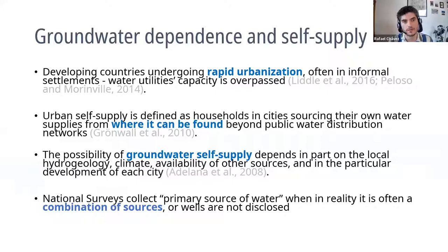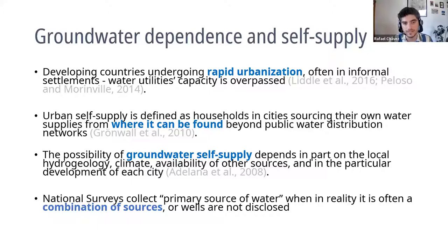As you might know, since 2014, half of the world population is urban. Especially in developing countries, this ongoing urbanization is happening mostly in informal settlements, which means that public service infrastructure is not growing as fast as cities are, and so water utilities capacities are overpassed. As a consequence, people have to source water from wherever they can find it outside the public networks.